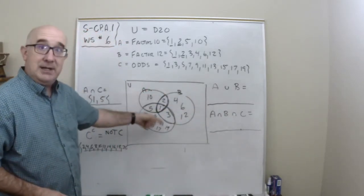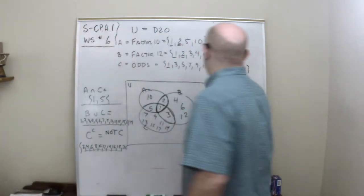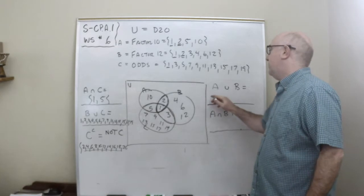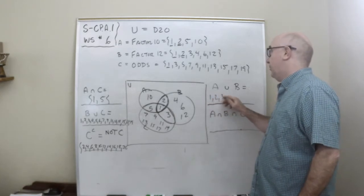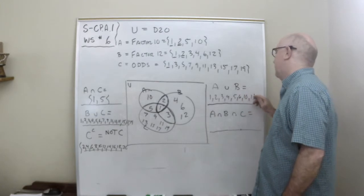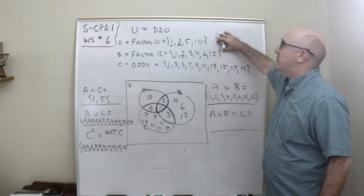How about the union of A and B? Well that would be a 1, a 2, a 3, a 4, a 5, a 6, a 10, and a 12 would be the union of those, putting them together.